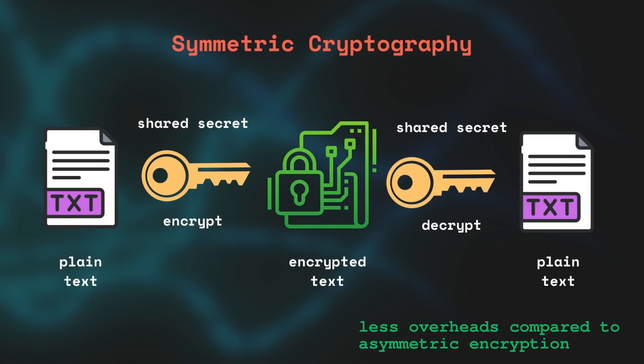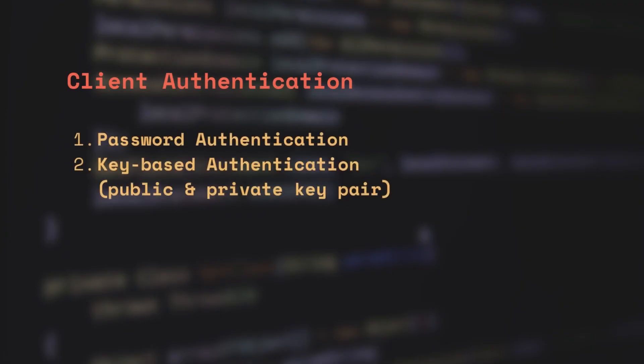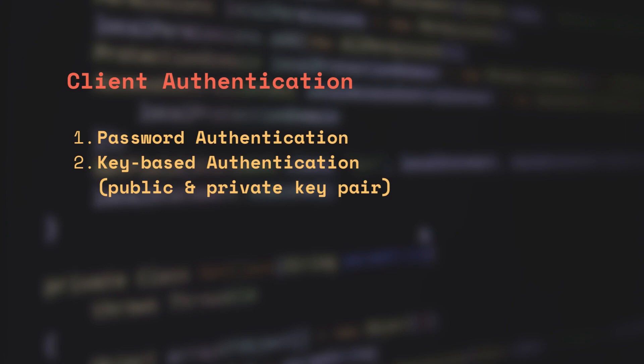So, both the server and the client have arrived at a shared symmetric key for encrypting future messages. Now the server needs to authenticate the client. There are two options for that: password-based authentication and key-based authentication — that is, using another pair of public and private keys. Key-based authentication is generally more secure as it does not involve passwords that can motivate some people to brute-force your server.